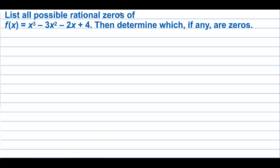Find all possible rational zeros of this polynomial, then determine which, if any, are zeros. So the possible rational roots are plus or minus 1, plus or minus 2, and plus or minus 4 — the factors of 4. Since the leading coefficient is 1, we don't have to divide all these by 1.